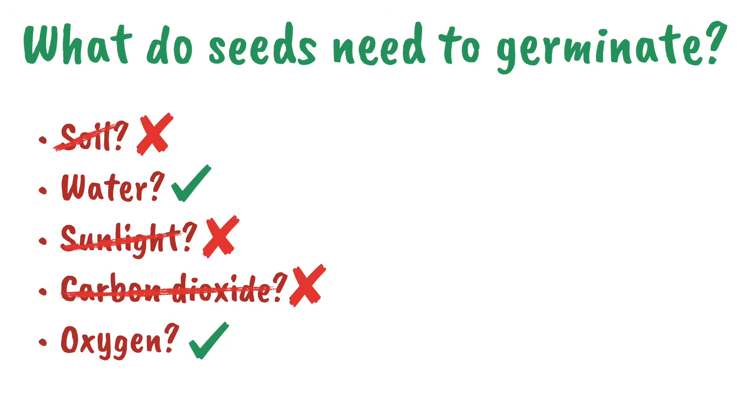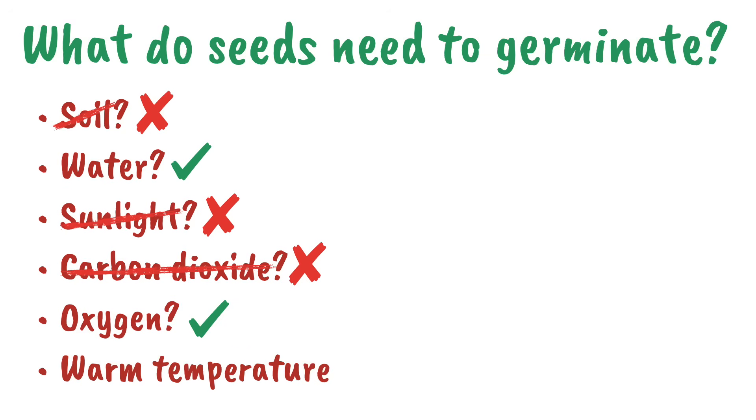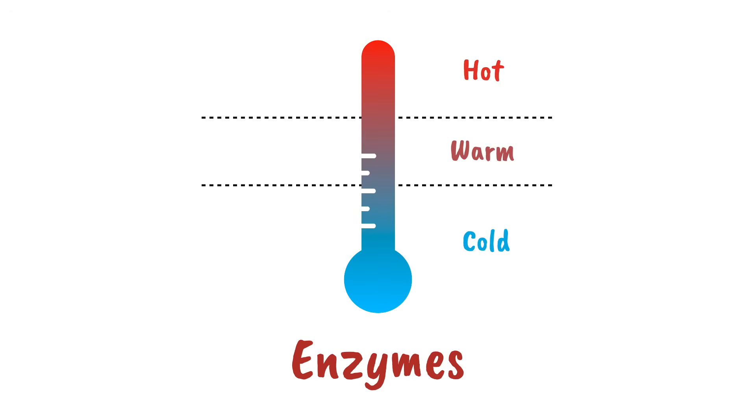There's one more thing. A warm temperature. Remember that pretty much all chemical reactions in living organisms require enzymes. For reactions involving enzymes, it can't be so hot that the enzymes are destroyed. Or so cold that the molecules move too slowly. For successful germination, we need a warm temperature that's just right.